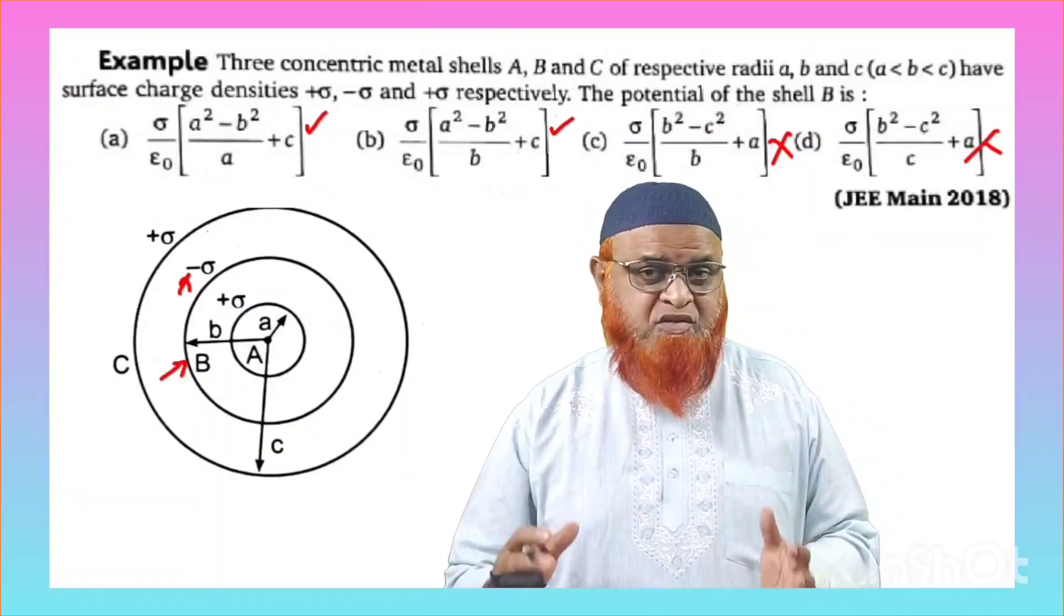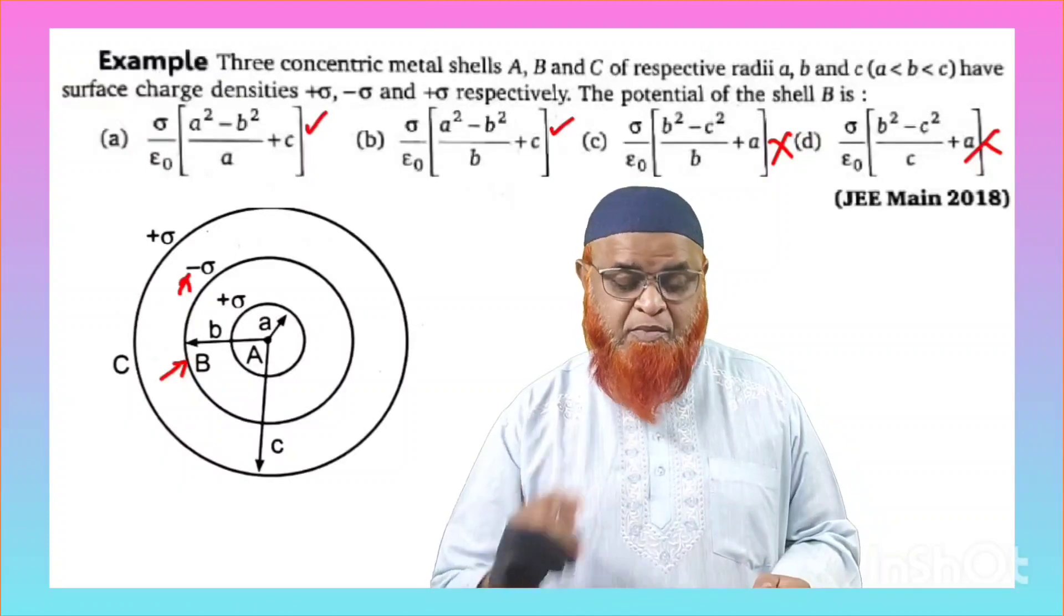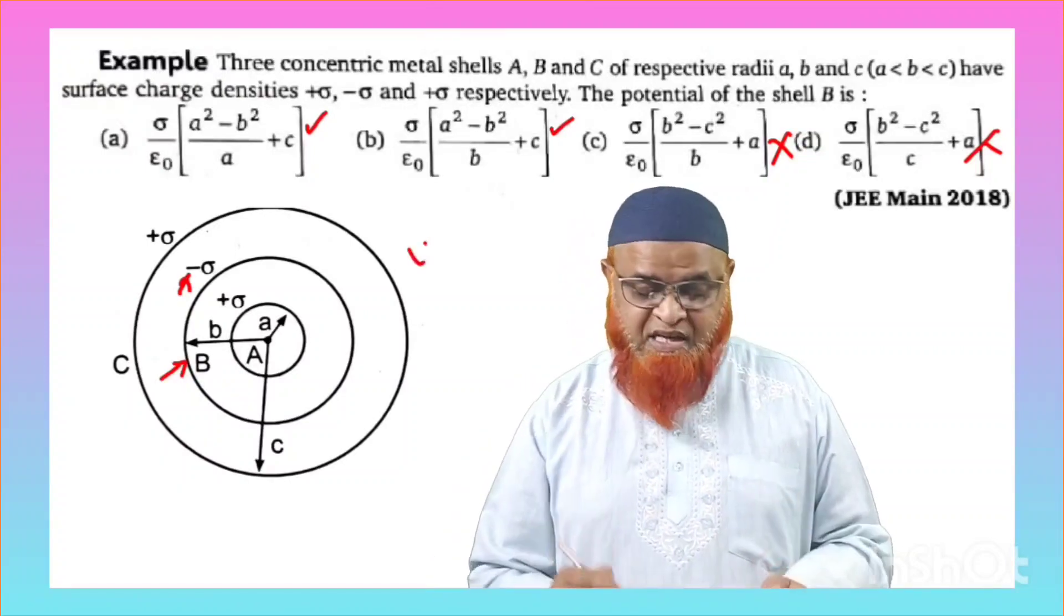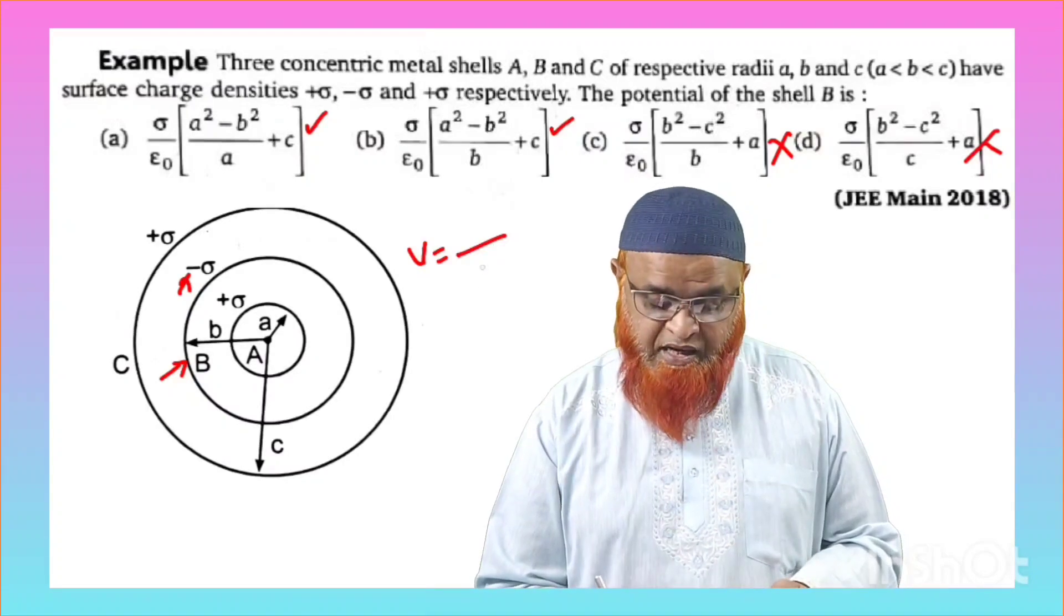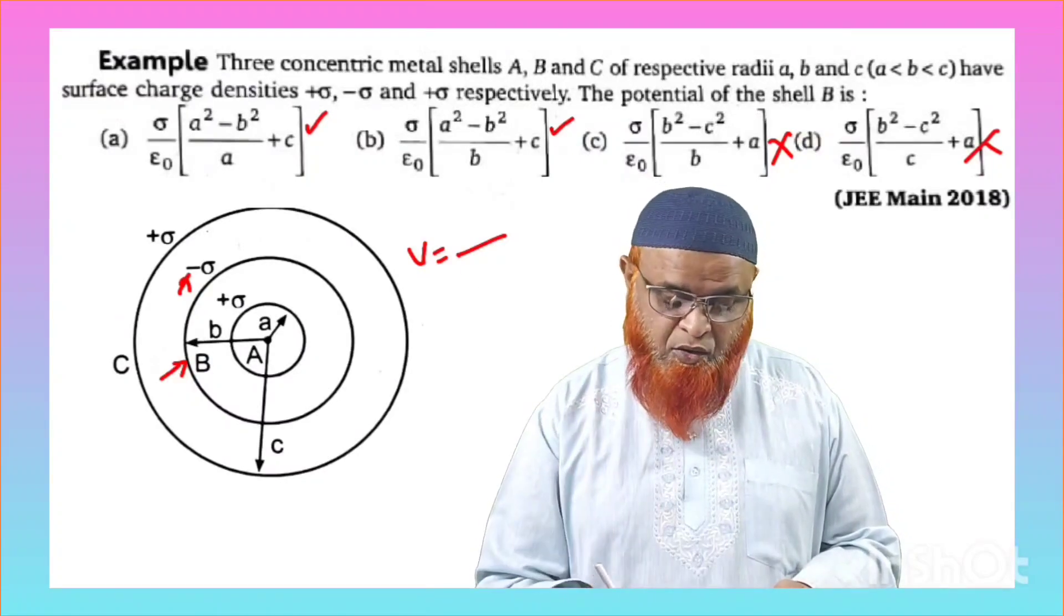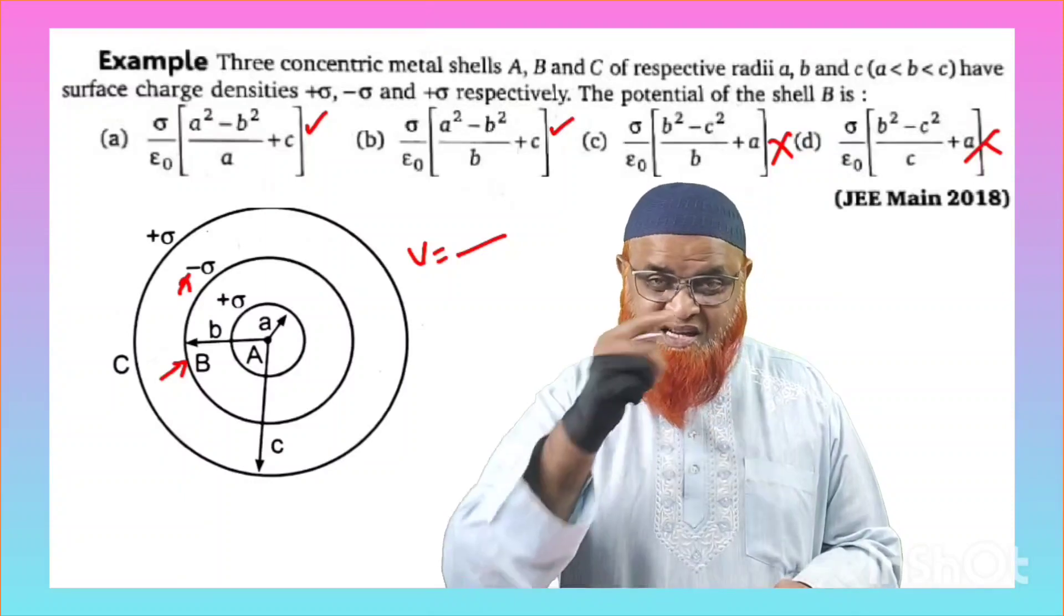So how are you going to select first and second option which is going to be correct here? One thing it is clear that potential means you all know that in denominator you have to consider the value on which you are going to consider that shell.